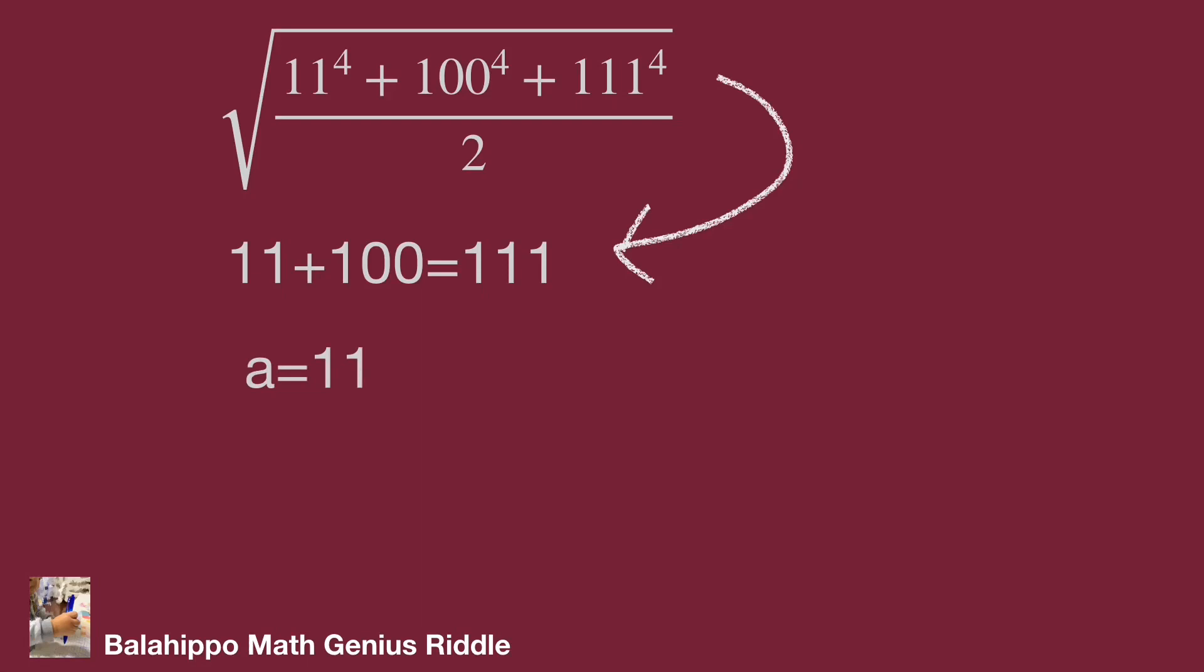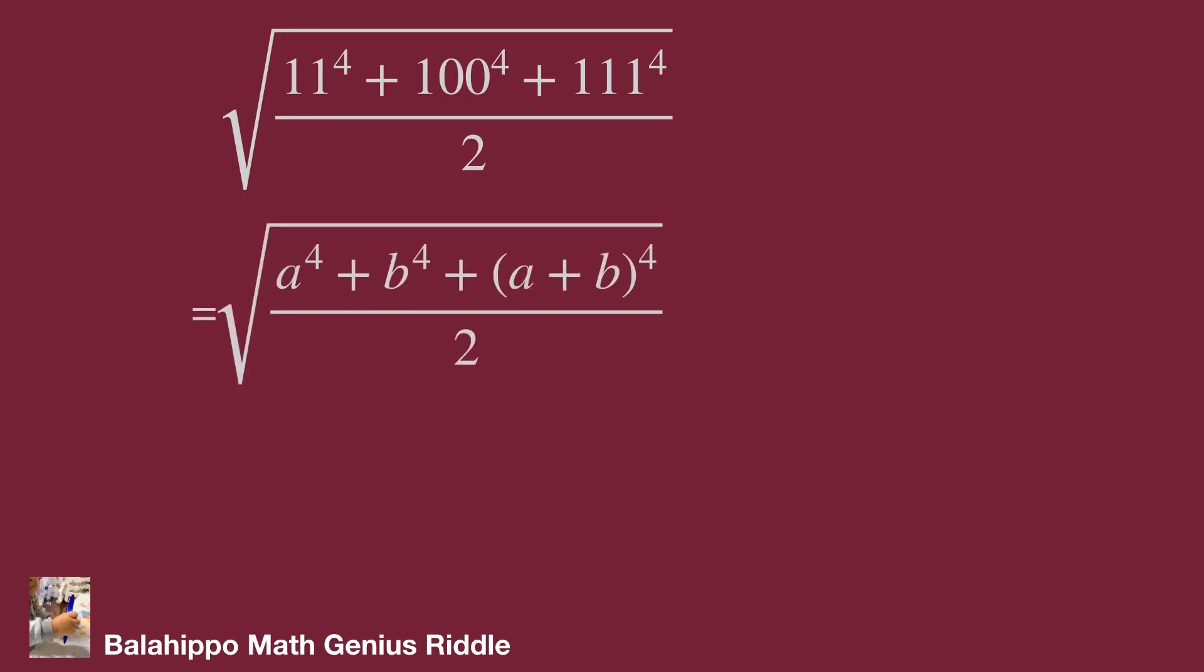Then let a = 11, b = 100. Therefore, a + b = 111. Substitute values 11 and 100 by a and b. We have new questions: square root of (a^4 + b^4 + (a+b)^4) divided by 2.